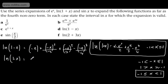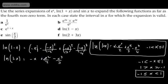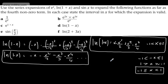So the natural log of 1 minus x is going to be minus x, then plus x squared over 2, then minus x cubed over 3, then minus x to the 4th over 4. These first four terms are valid for x greater than or equal to negative 1 and strictly less than 1.